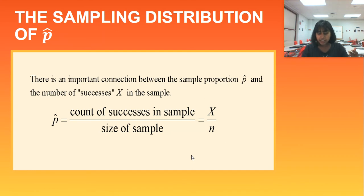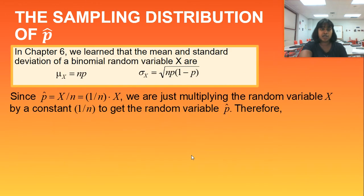So there is a relationship between the binomial count X and the sampling distribution of p-hat. And we actually see it right here. The p-hat can be equivalent to the count of successes in your sample, so your X divided by the size of your sample. Really cool. We have a connection there. But let's further continue talking about this.